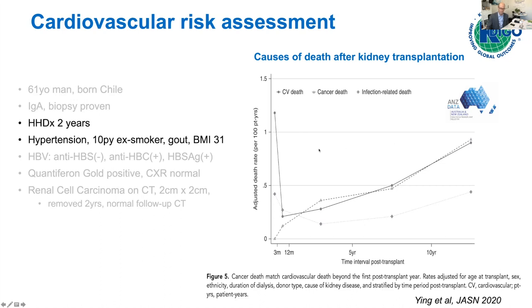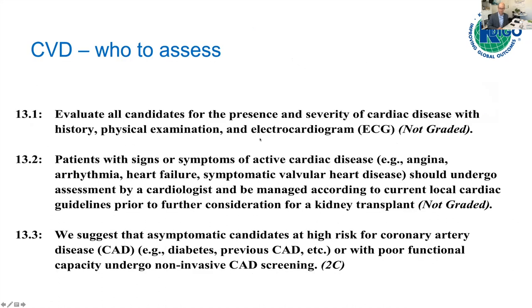As we see, our patient had two years on hemodialysis — not a long time — but significant hypertension, a smoking history, and obesity. So who should we assess for cardiovascular disease?